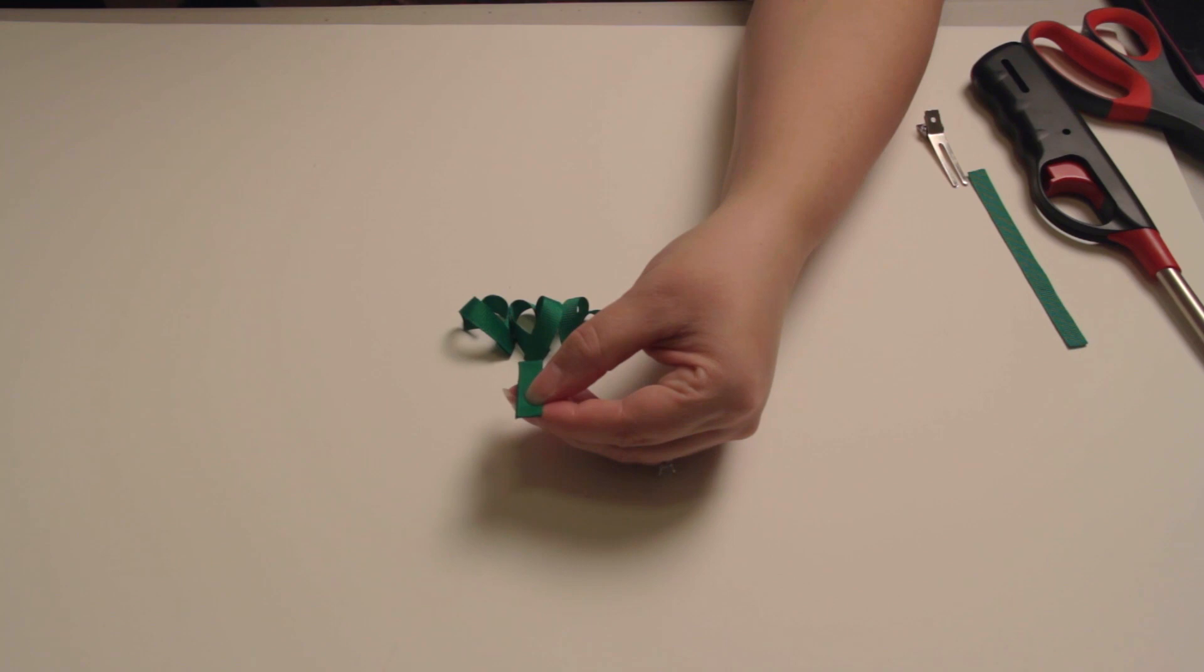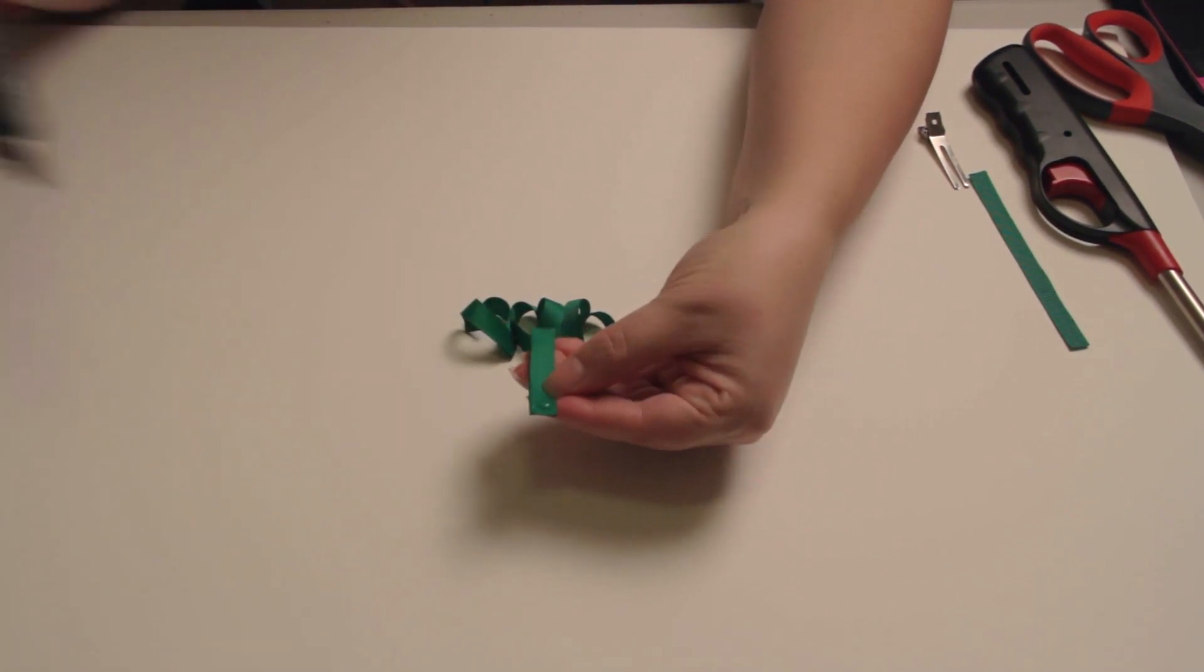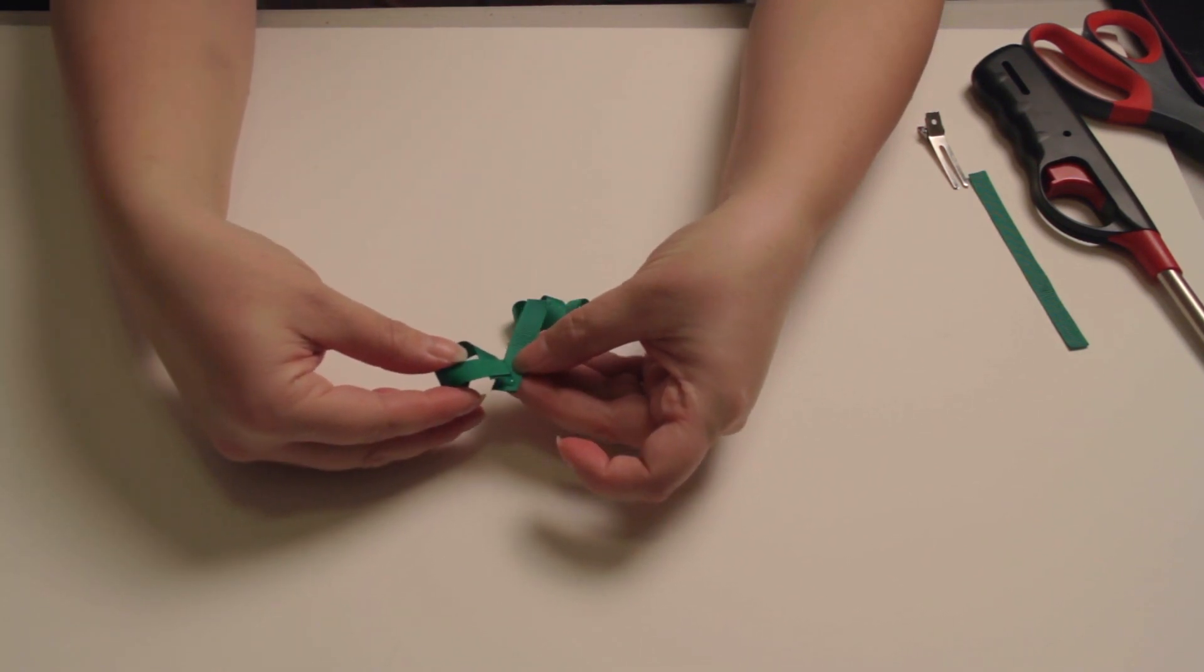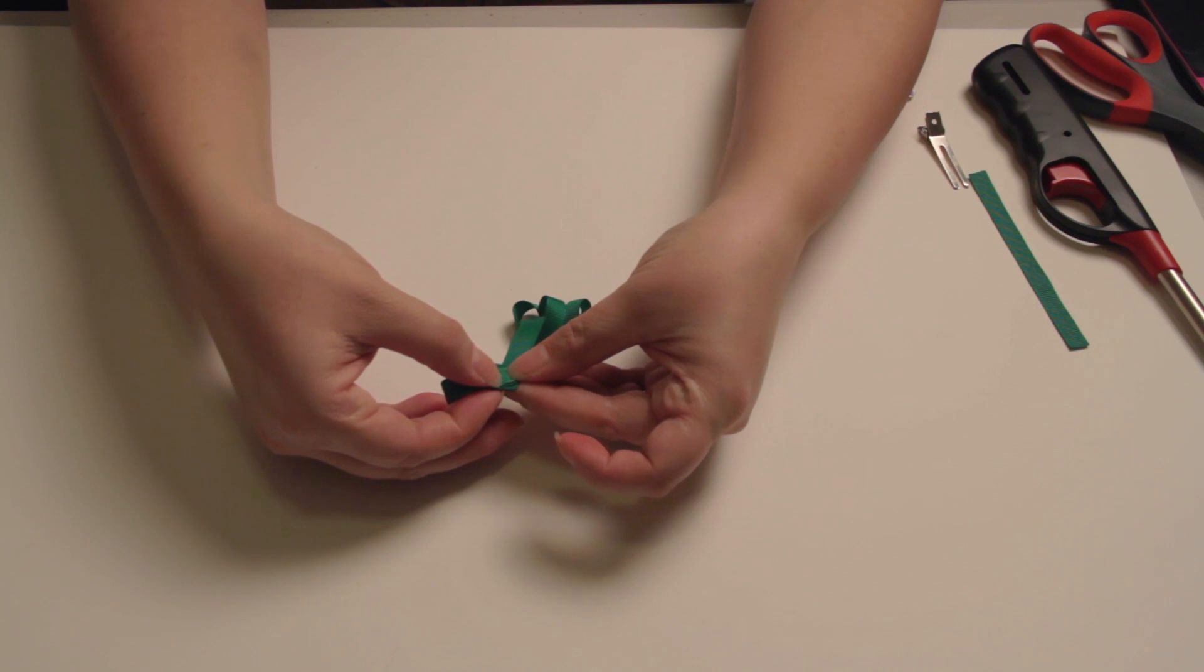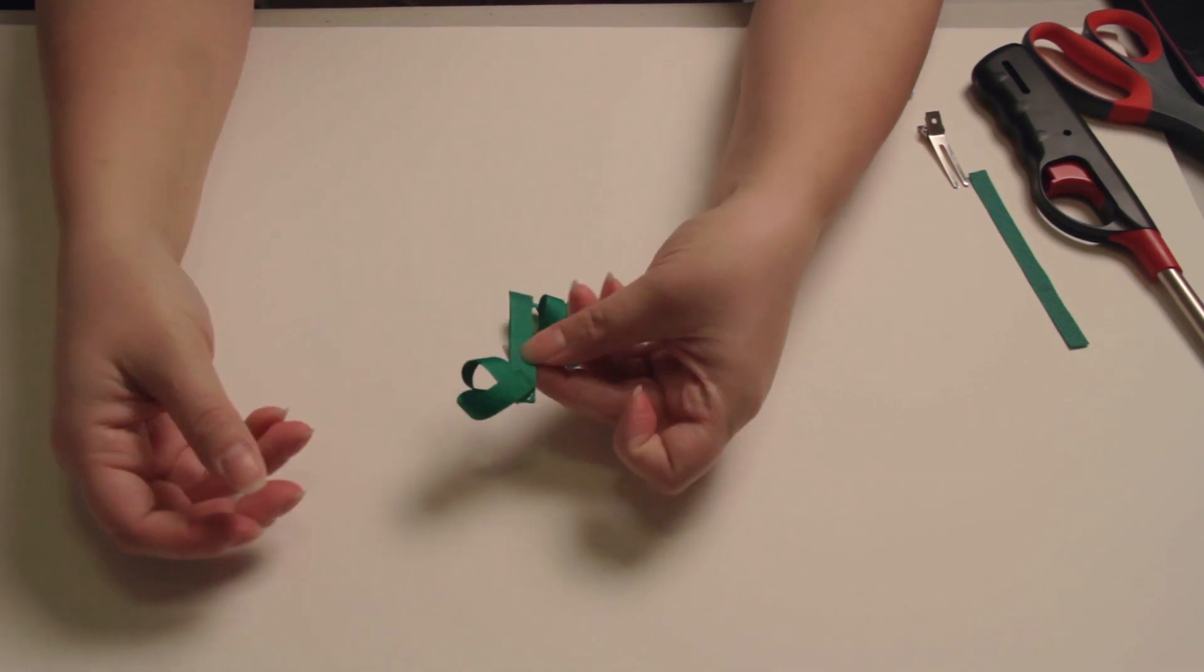So on the top you're going to put a dot of glue and take one of your hearts and glue it to the stem. So it looks like this.